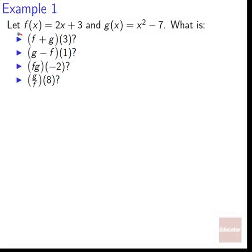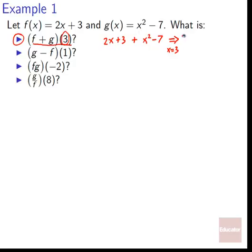Time for some examples. f plus g of three, where f of x equals two x plus three and g of x equals x squared minus seven. We've got two x plus three plus x squared minus seven. Plugging in x equals three: two times three plus three plus three squared minus seven. That's six plus three plus nine minus seven. Nine plus nine is 18, minus seven gives us 11.